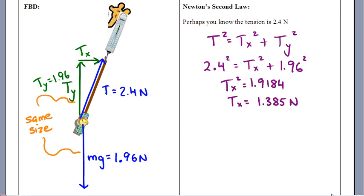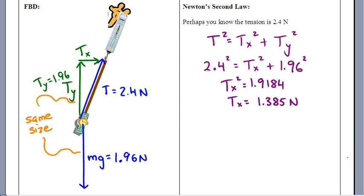So now we can go and do F net equals MA. Notice what we've done, though, to find that Tx, that 1.385. You cannot get that 1.385 number simply by taking this 2.4 and subtracting the 1.96.